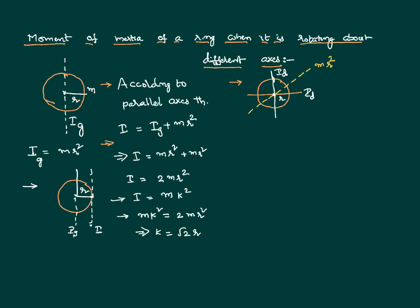We can think of this as x, y, and z axes all passing through the same point. The x and y axes are perpendicular to each other and lie in the same plane, while the z axis passes through the same point but is perpendicular to that plane. As per the perpendicular axis theorem, I_z = I_x + I_y. Since the body is uniform, I_x = I_y = I_diameter. So mr² = 2 · I_diameter, which implies the moment of inertia of the ring about any diameter equals mr²/2.